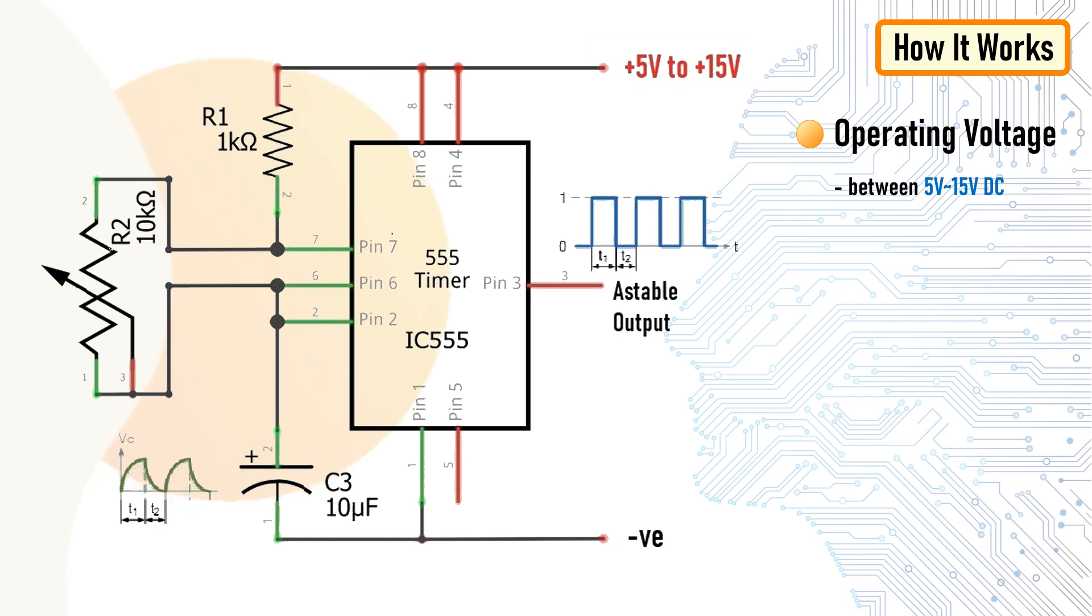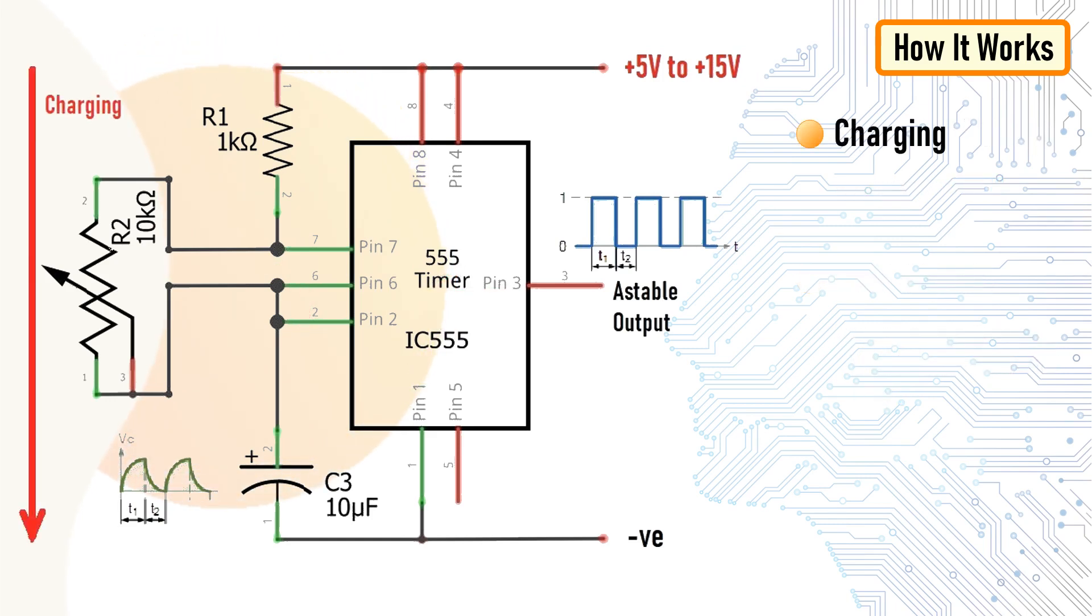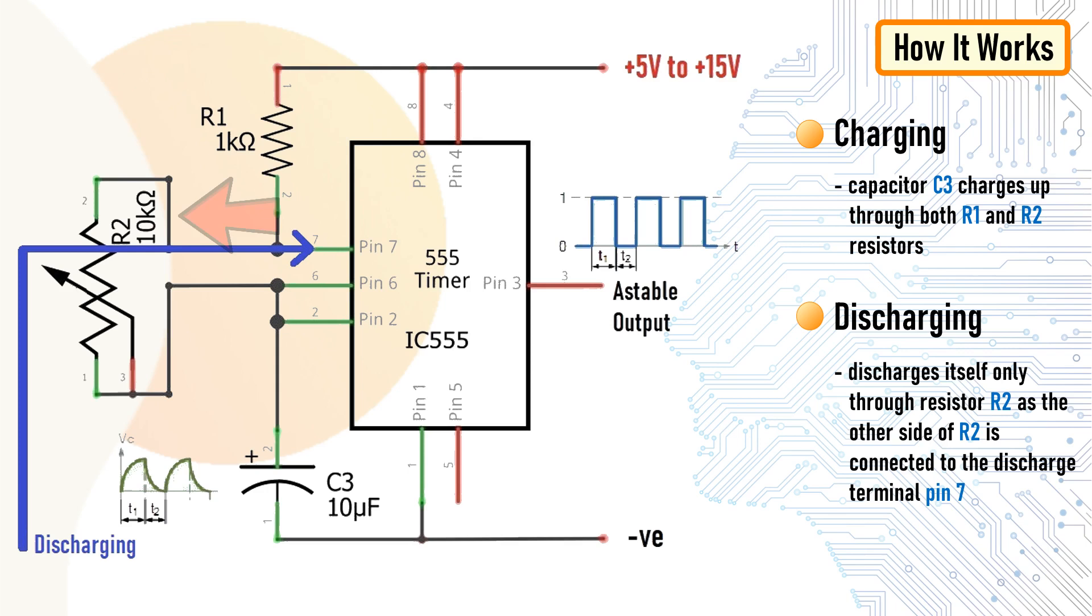As previously discussed, 555 timer generates PWM signal when set up in an astable mode by connecting pin number 2 and 6 together. During each cycle, capacitor C3 charges up through resistor R1 and R2 but discharges itself through the resistor R2 as the other side of R2 is connected to the discharge terminal pin number 7.